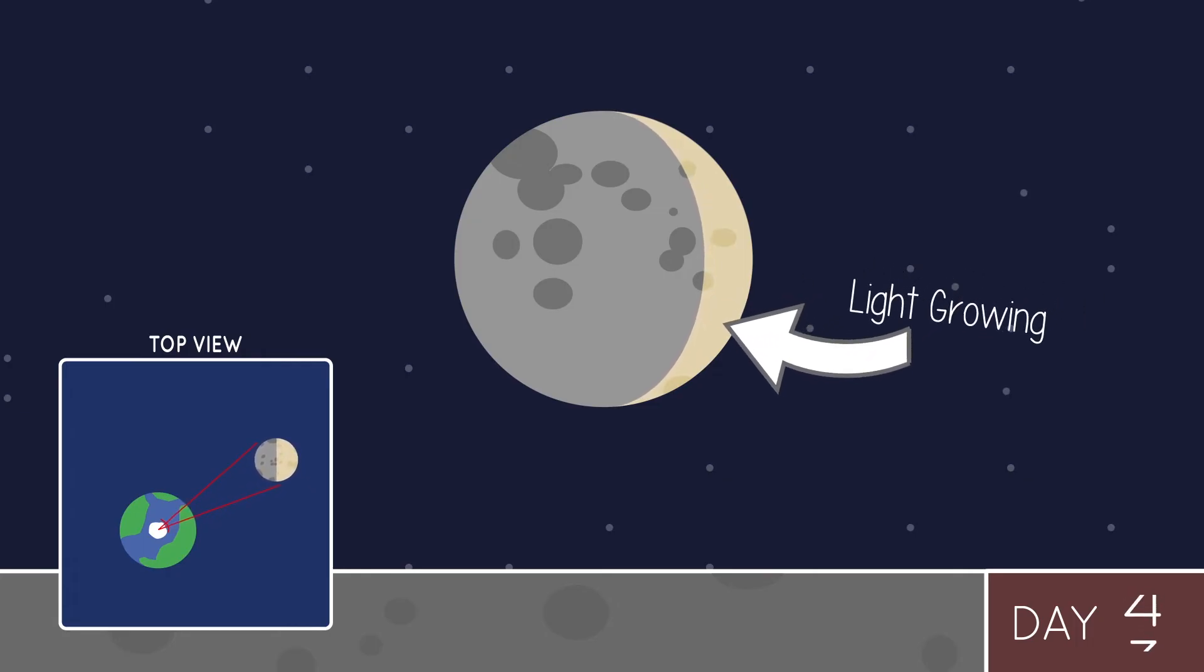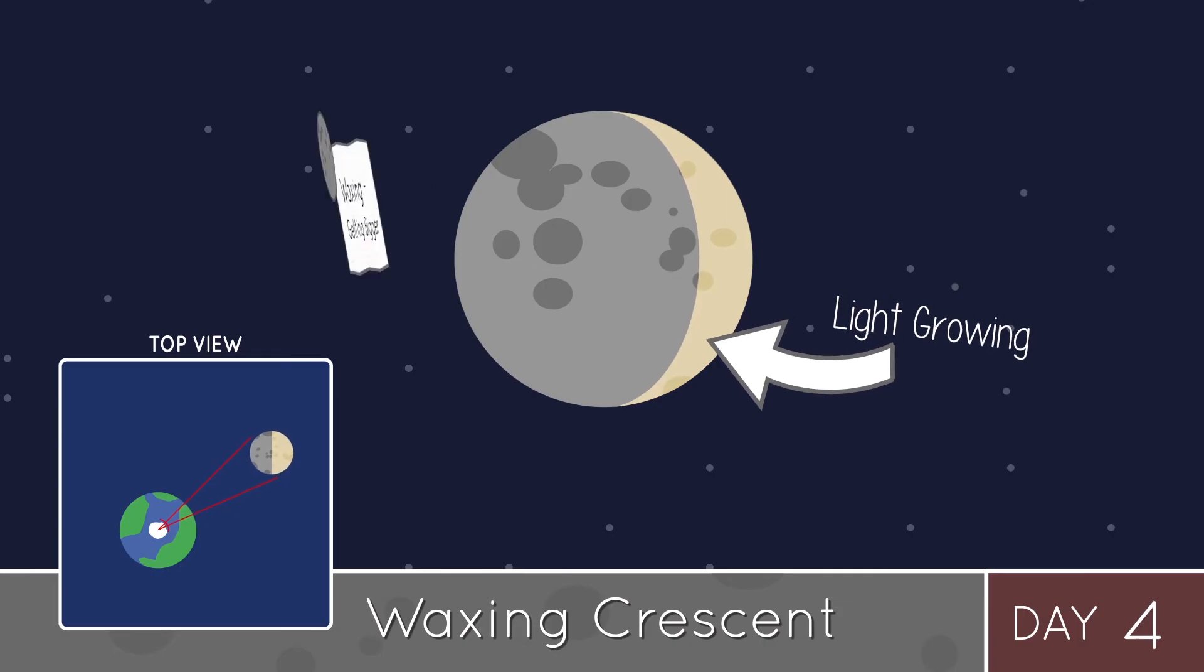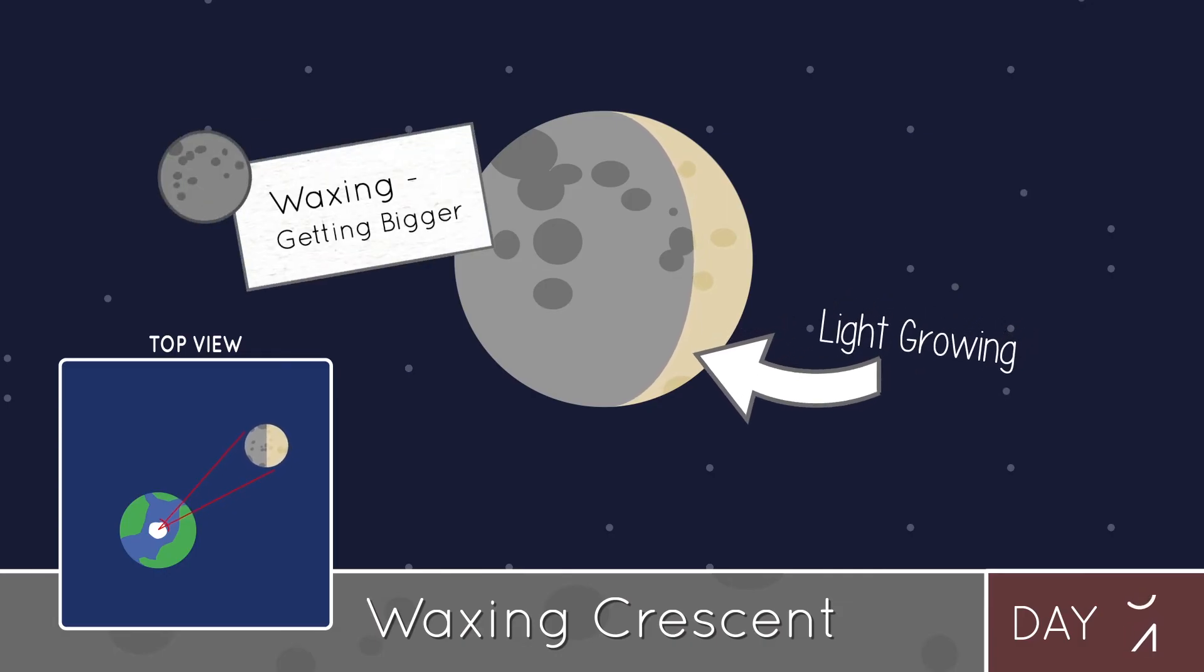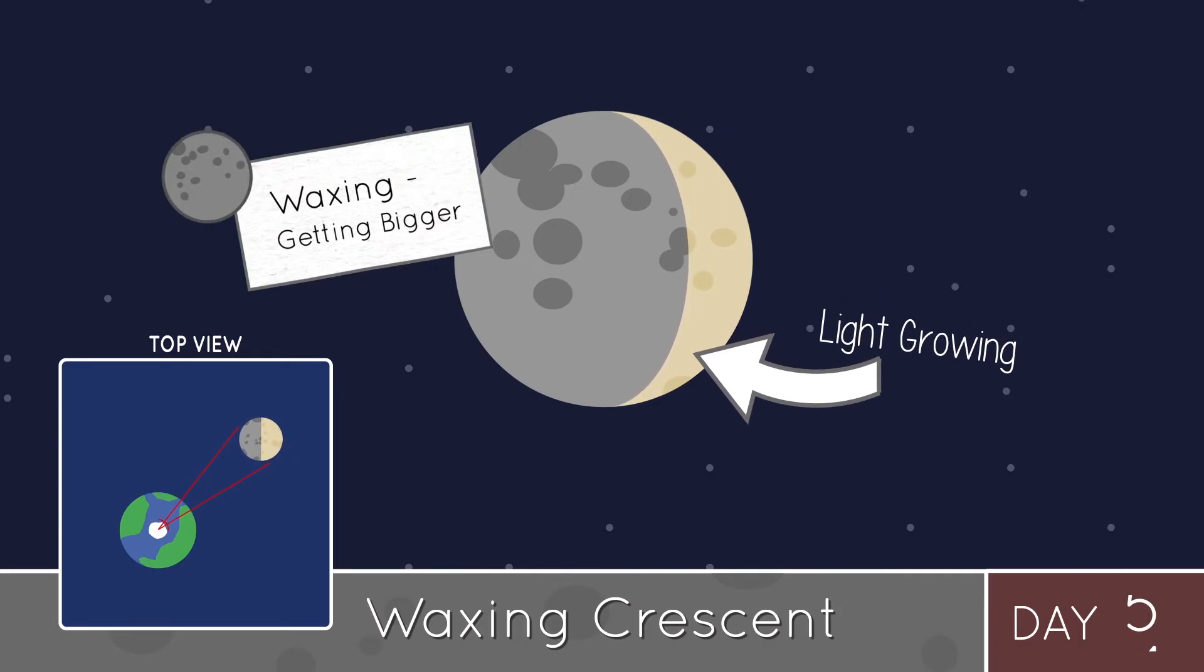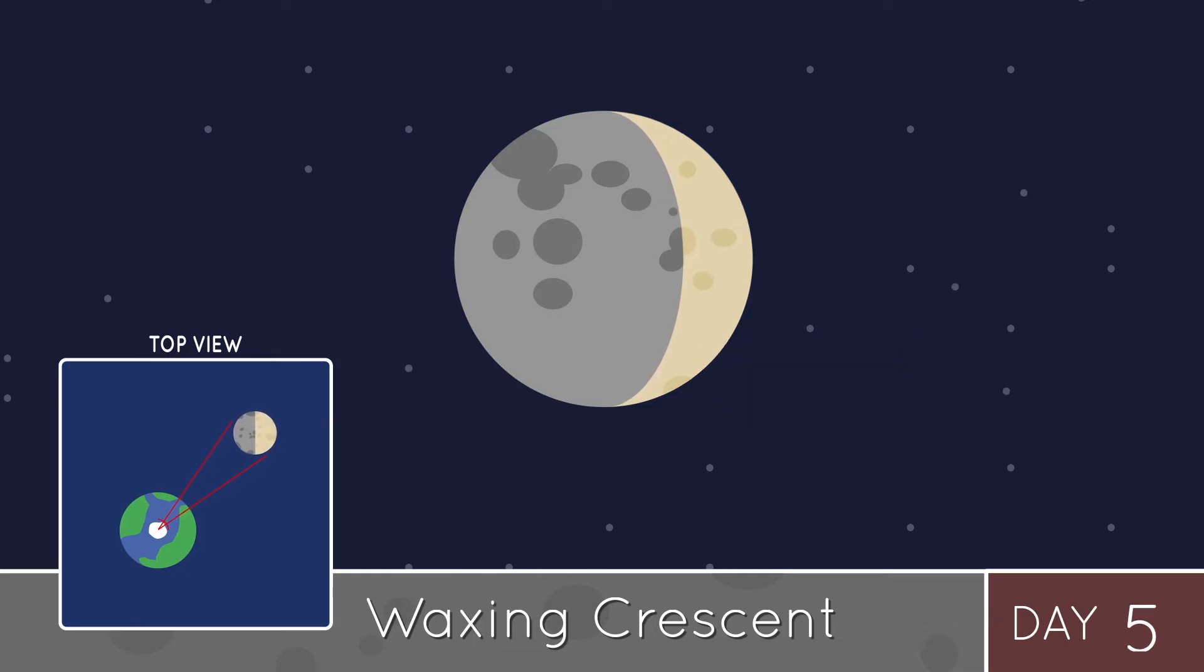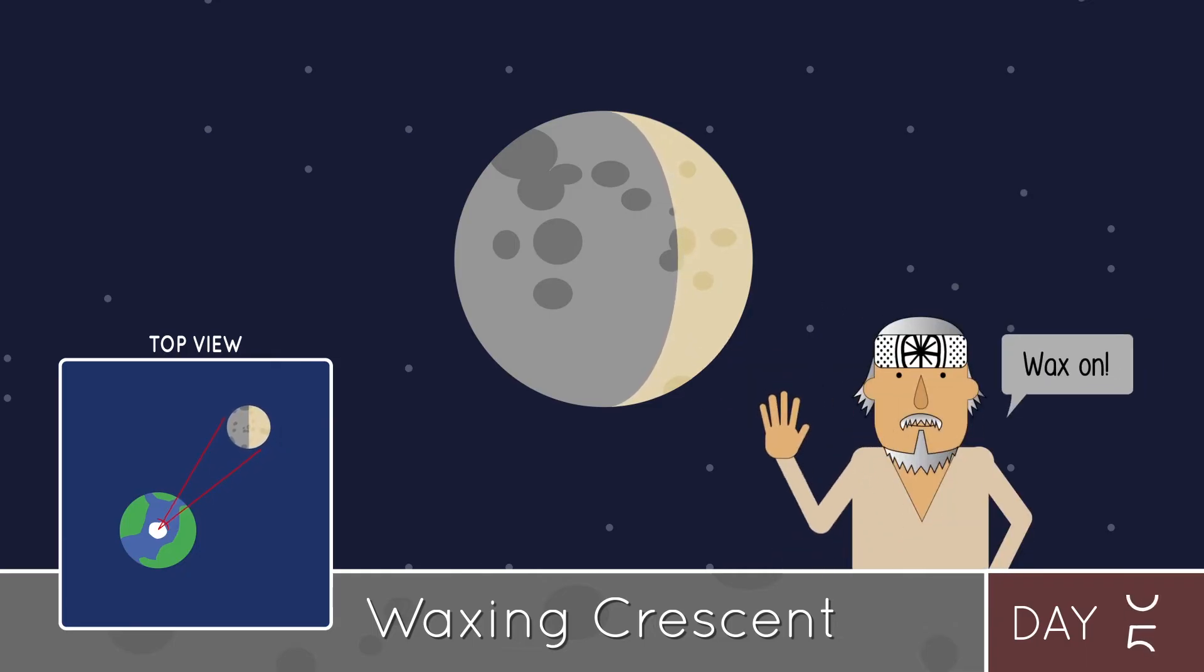Waxing means getting bigger, and when it comes to the moon, that means the moon is getting more and more illuminated. You can remember, wax on. We call it a crescent, well, because it looks like a crescent. You know, not everything has to be complicated, okay?